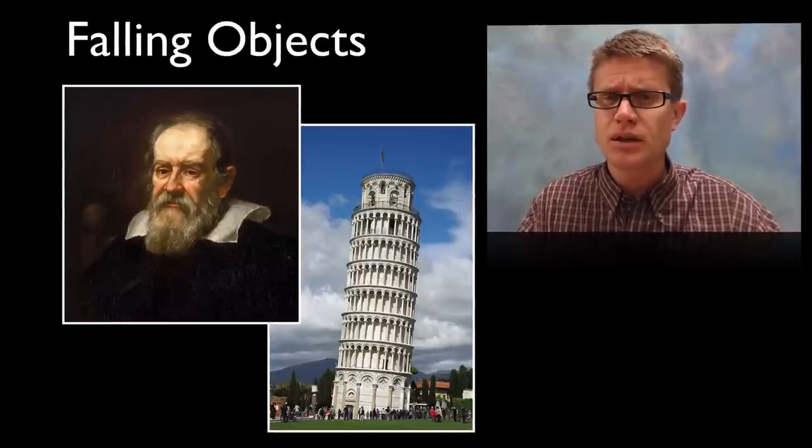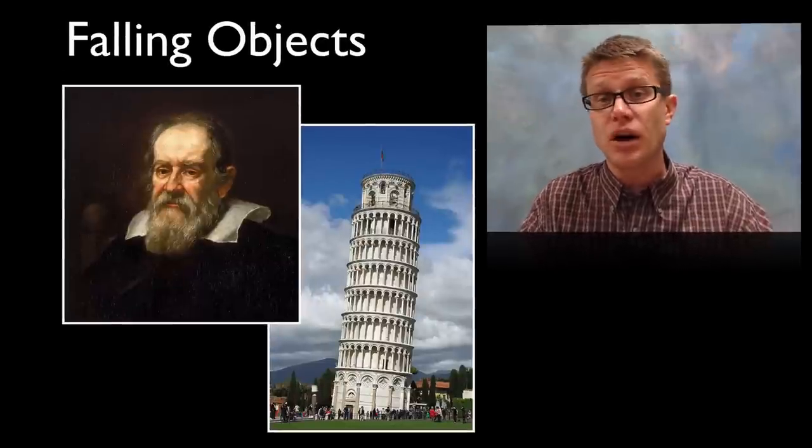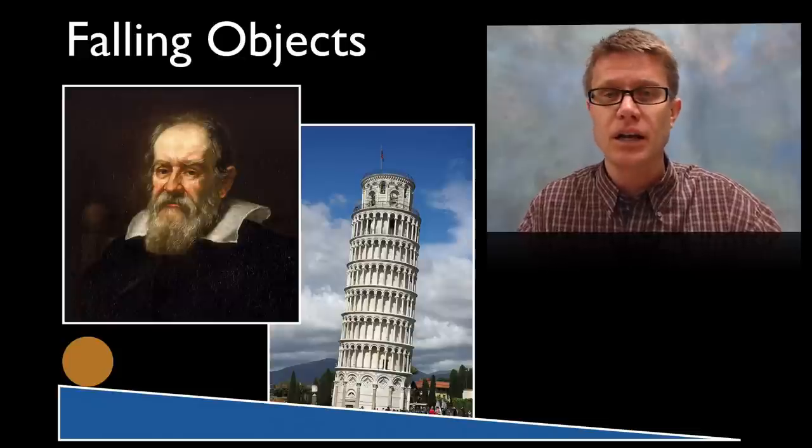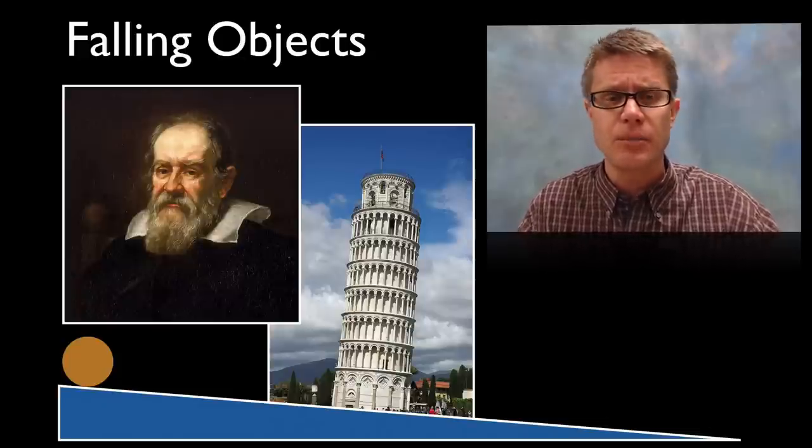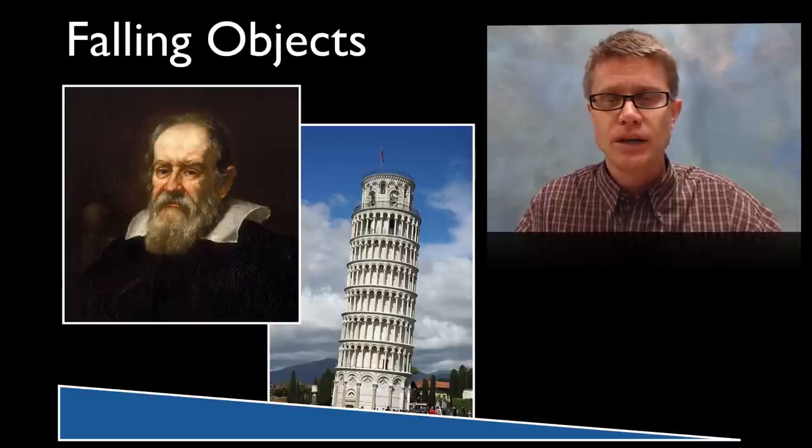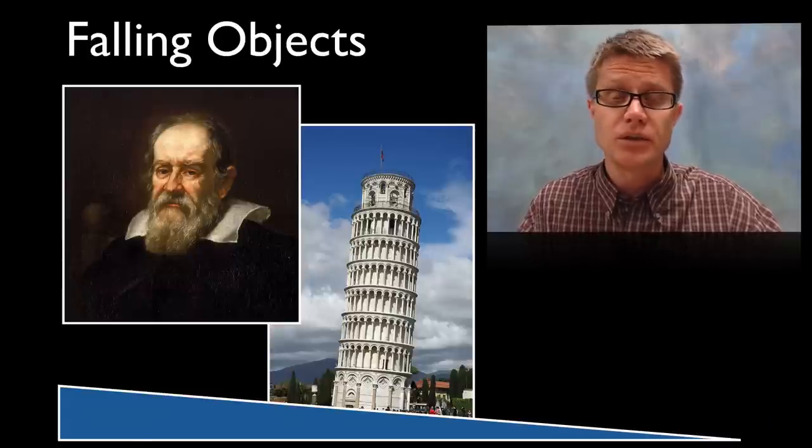Scientists have noted some interesting things on our planet going way back to Galileo, who probably did not drop objects from the Leaning Tower of Pisa, but rather rolled these balls down an inclined plane and varied the amount of mass. And he found that they all rolled down with the same acceleration.